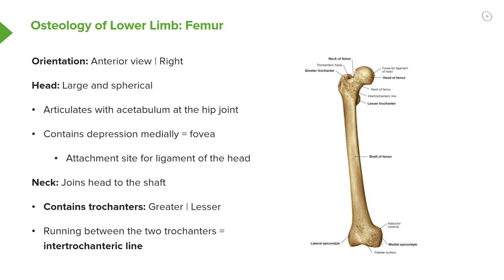Here we have the anterior view of the right femur. We've got the head of the femur here — it's large, it's spherical, and it articulates with the acetabulum at the hip joint. It contains a depression medially which is the fovea, and this contains the attachment site for the ligaments of the head of the femur.